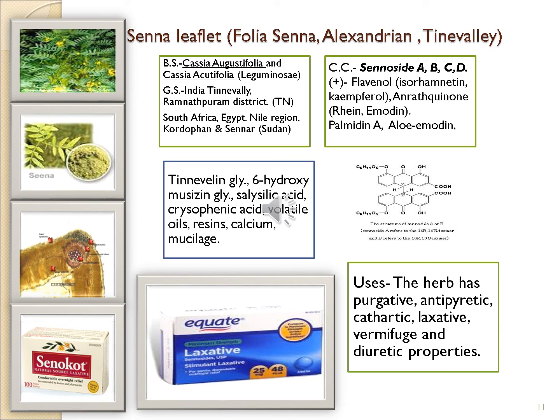The senna leaflet is described here. Its synonyms are Folia Sennae, Alexandrian senna, and Tinnevelly senna. Biological source: senna consists of dried leaflets of the plant Cassia angustifolia and Cassia acutifolia, belonging to the family Leguminosae. It is found in India in the Tinnevelly region and Ramanathapuram district.